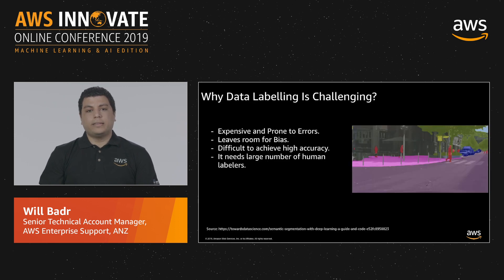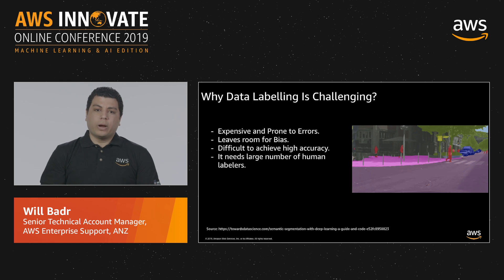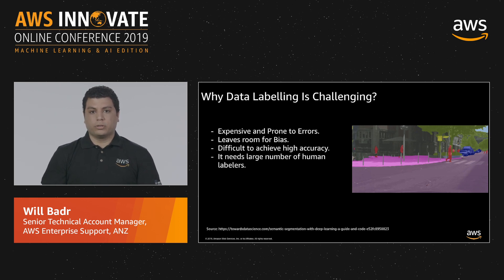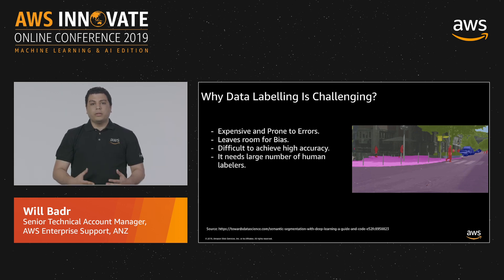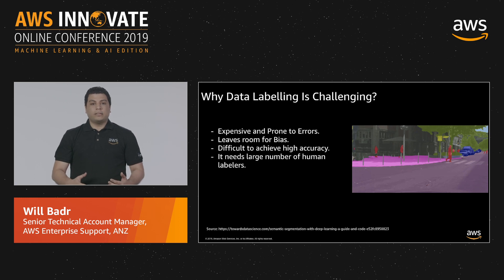So why is data labeling difficult? Supervised learning algorithms are extremely powerful, but they require a lot of manual effort and are prone to errors. They also require distributing the task over a large number of human workers, which can add significant overhead and cost, and leaves room for human bias and errors. Building the training data set can take up to 80% of the time needed to build a deep learning model, and as the data sets get more complex, the problem becomes more acute.